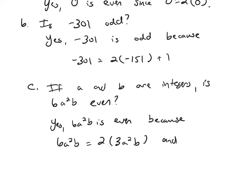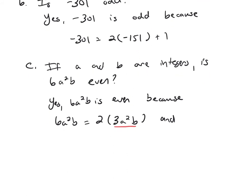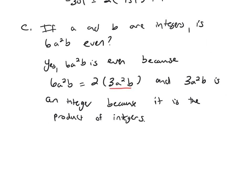And remember, the requirement is that this thing in parentheses has to be an integer. So why is it an integer? 3a squared b is an integer because it is the product of integers. Products of integers are integers. Remember, integers are like whole numbers. When I multiply whole numbers together, it's still a whole number.